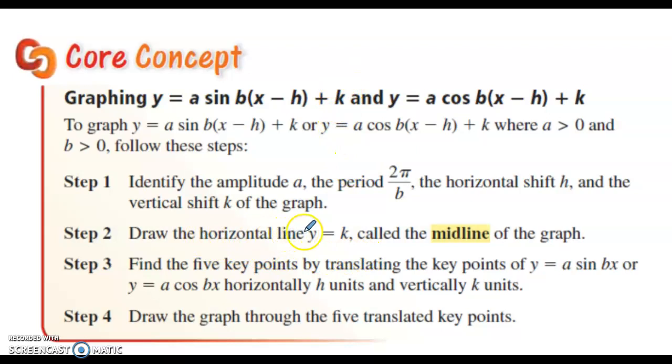You draw the horizontal line, Y equals K, that's called the midline. So the midline of the graph is whatever K is right here. That's the horizontal line for the midline of the graph. The five key points of translating are the midline, the amplitude, the period, horizontal, and vertical. So let's look at what that means for graphing.